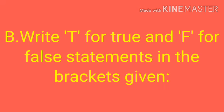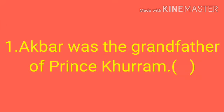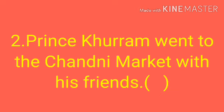Question B: Write T for true and F for false statements in the brackets given. Question 1: Akbar was the grandfather of Prince Khurram. Question 2: Prince Khurram went to the Chandni market with his friends.